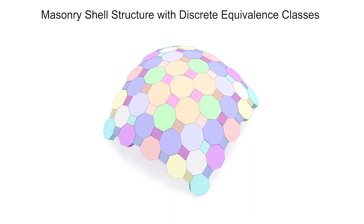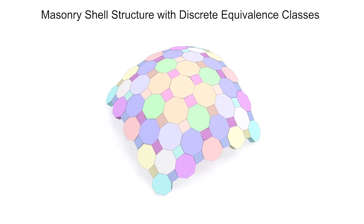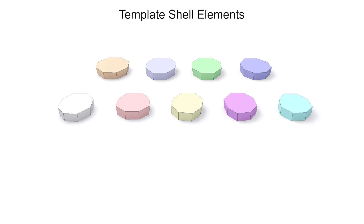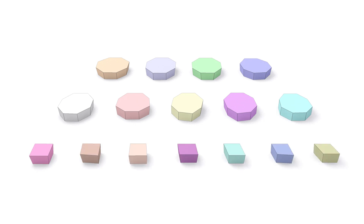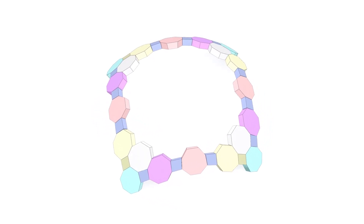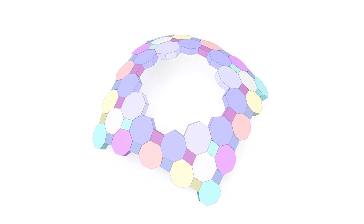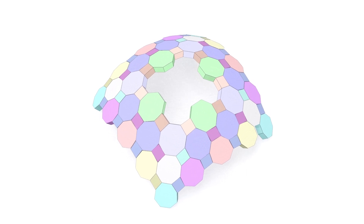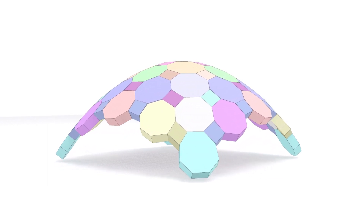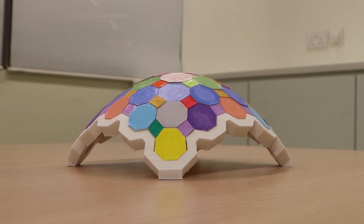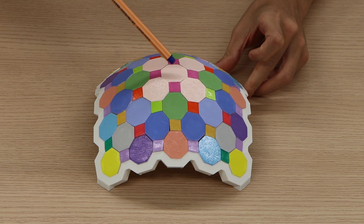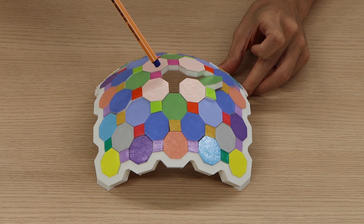We present masonry shell structures where the shell elements fall into a set of discrete equivalence classes. Our goal is to generate a small set of template shell elements whose instances can produce a seamless and buildable shell structure that closely resembles a given surface. We validate buildability of our result by making a physical prototype and demonstrate that the shell structure is self-supporting purely based on planar contacts among the shell elements.